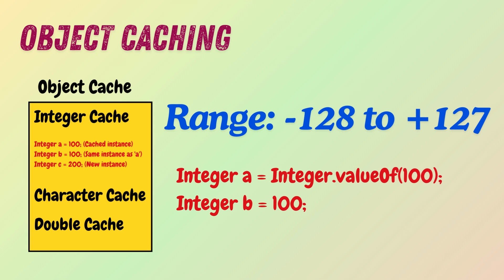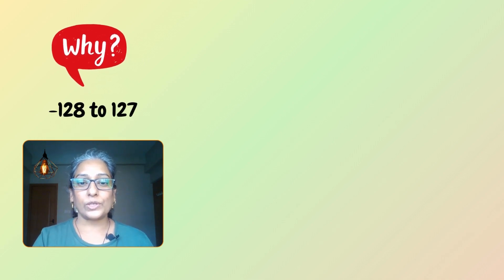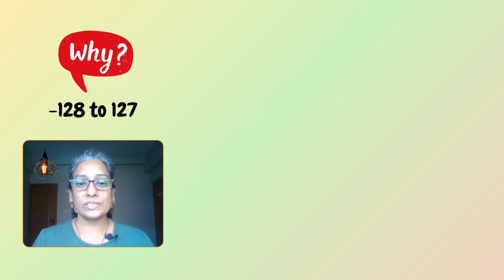For the Integer class, values between minus 128 and 127 are cached. This caching mechanism ensures that any two Integer objects representing the same value within this range refer to the same memory location. But why only values within the range of minus 128 to plus 127?